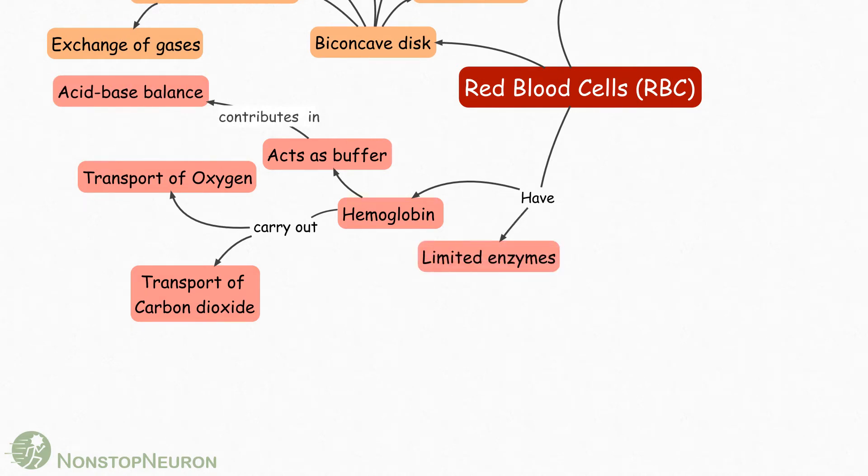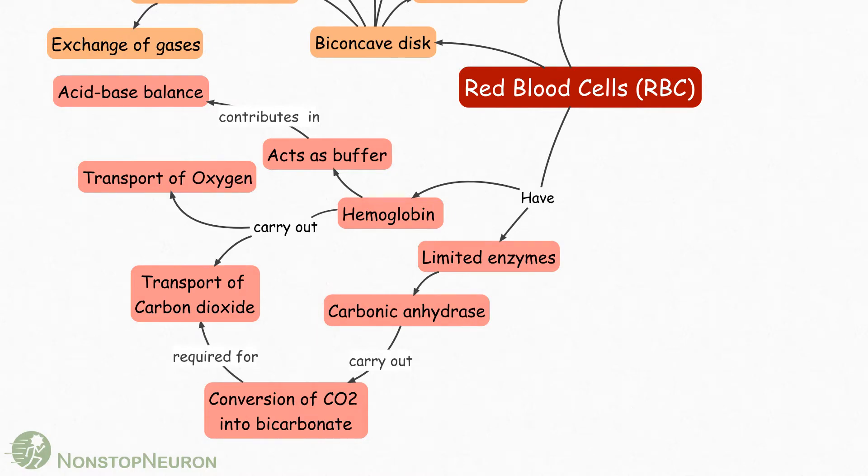RBCs have limited enzymes. It includes carbonic anhydrase which carry out conversion of carbon dioxide into bicarbonate. This conversion is required for transport of carbon dioxide.